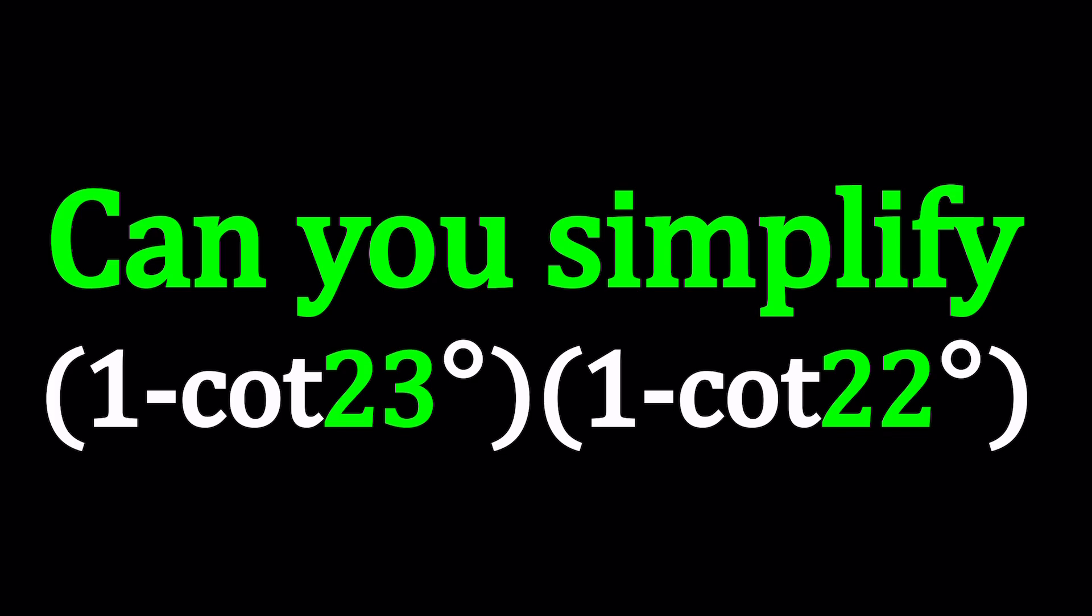So whenever you're given a problem like this, what are you thinking? What is cotangent 23 degrees? Is that a special angle? Probably not. I mean, 23 is not a special angle, it's a prime number. 30, 60, 90, those are good special angles, but 23 is not one of them.